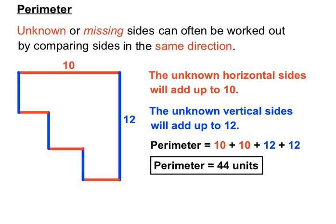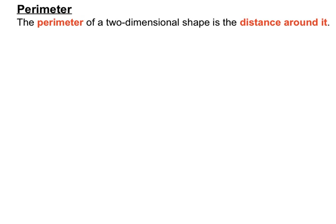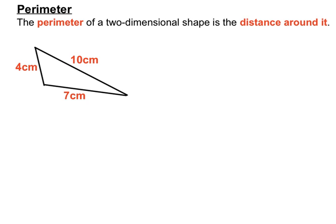The perimeter of a two-dimensional shape is the distance around it, so we add up all the sides. Here: 10 plus 7 plus 4 — the perimeter of this triangle is 21 centimeters. We were given all three sides and all we had to do was add them up.